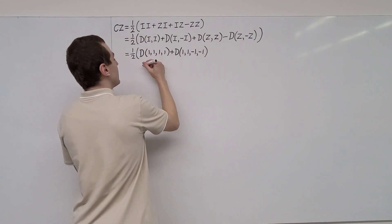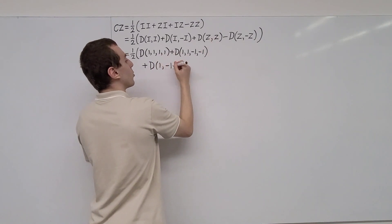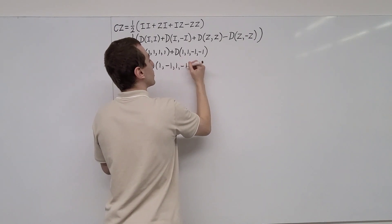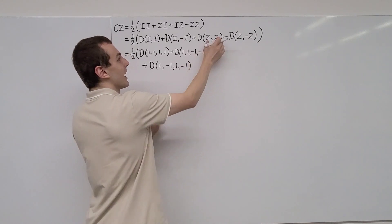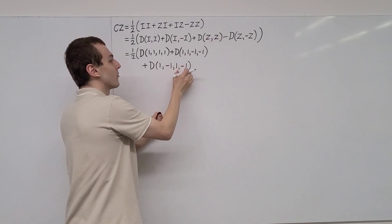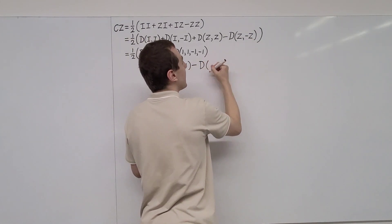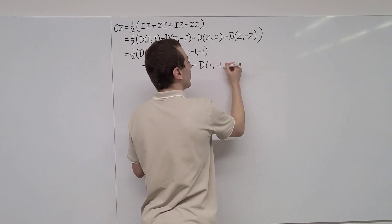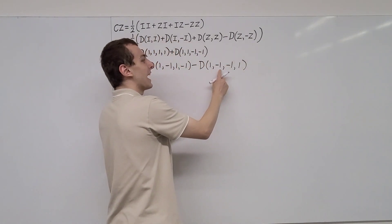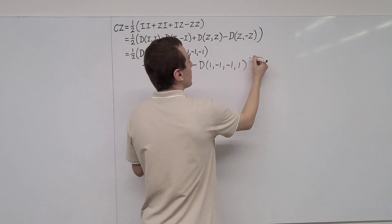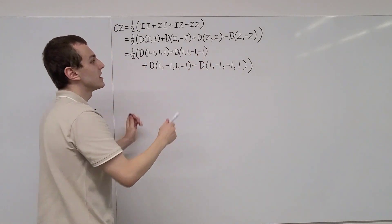Writing the other two terms in the row below: for the IZ term we have 1, minus 1, followed by 1, minus 1 — you can identify this is the identity and this is the minus of the identity, so Pauli Z followed by Pauli Z. Then we subtract the diagonal matrix with entries 1, minus 1, and then minus 1, plus 1 — so here we have Pauli Z and here we have minus Pauli Z. Those are the four terms expressed in explicit notation.